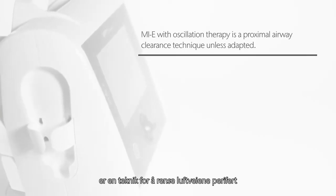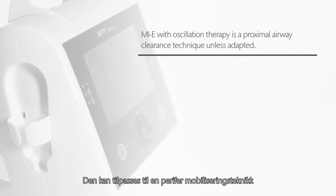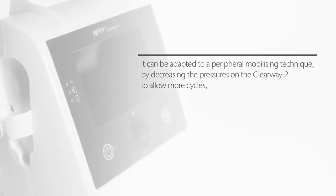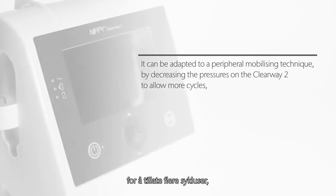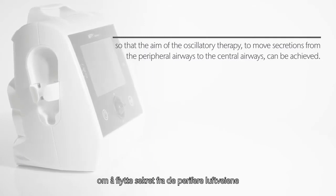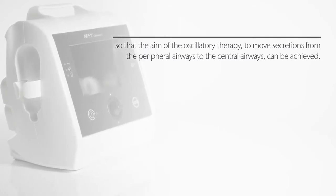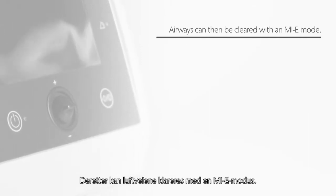MIE with oscillation therapy is a proximal airway clearance technique. It can be adapted to a peripheral mobilizing technique by decreasing the pressures on the Clearway 2 to allow more cycles, so that the aim of the oscillatory therapy — to move secretions from the peripheral airways to the central airways — can be achieved. Airways can then be cleared with an MIE mode.